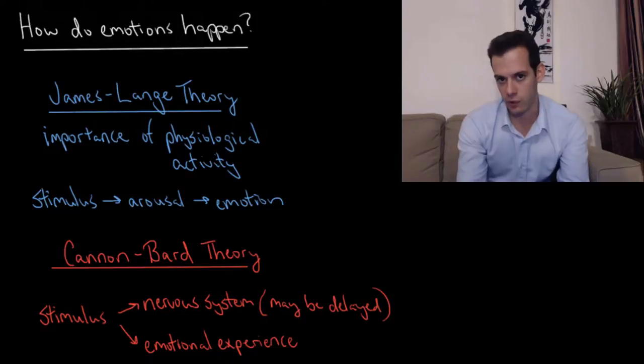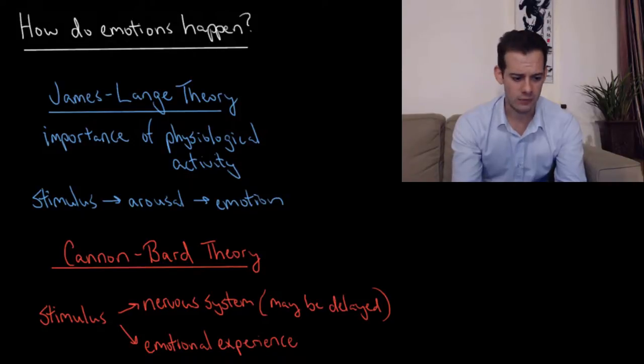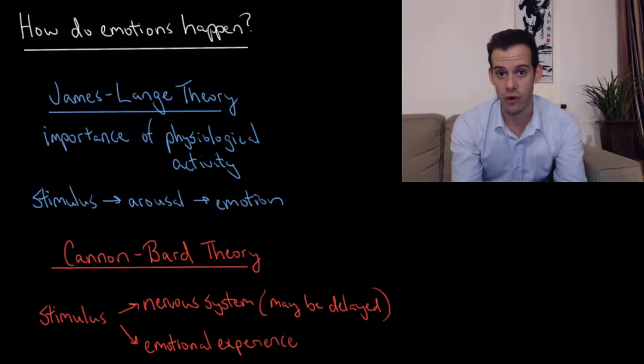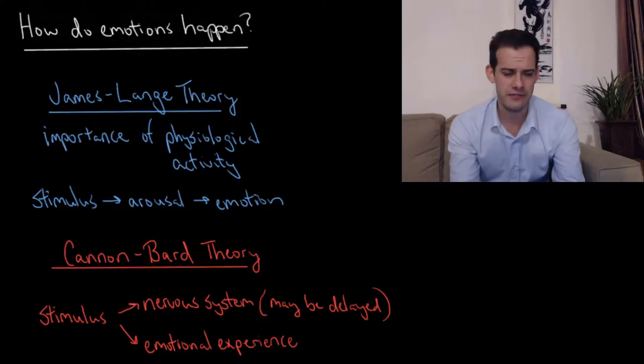It's not the case that you see the bear, feel afraid, and run, but as James described, you see the bear, you start to run, and you feel afraid. He also raised the idea that this physiological activity was fundamental to having emotions at all, that without physiological activity you wouldn't have emotions. He suggests trying to imagine something really funny and then thinking: would it be as funny if you didn't laugh? If you didn't have that physiological response in your body, if you didn't have that bodily expression of the feeling, would it be the same feeling?